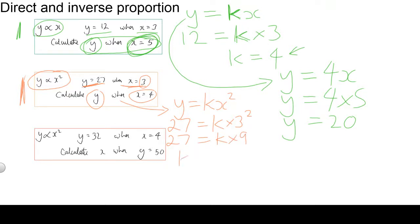So k, something times 9 to get 27, it's 3. 3 times 9 is 27. So our formula is y is equal to, well, we know the value of k now, it's 3, x squared.